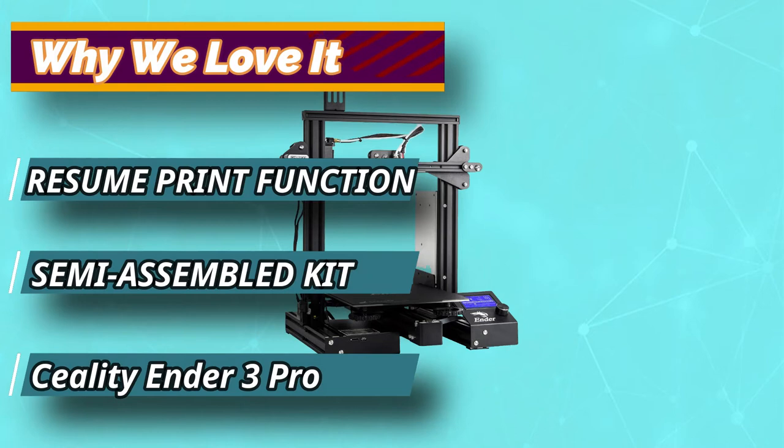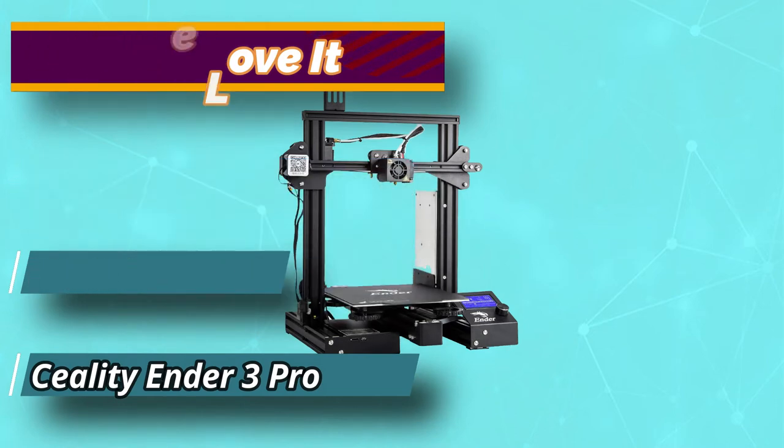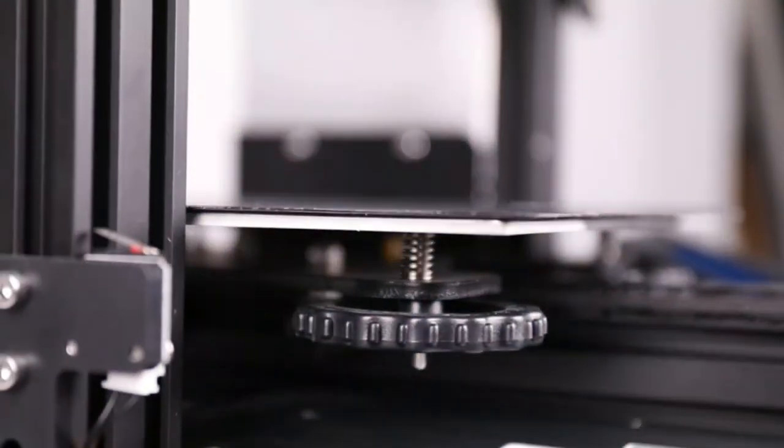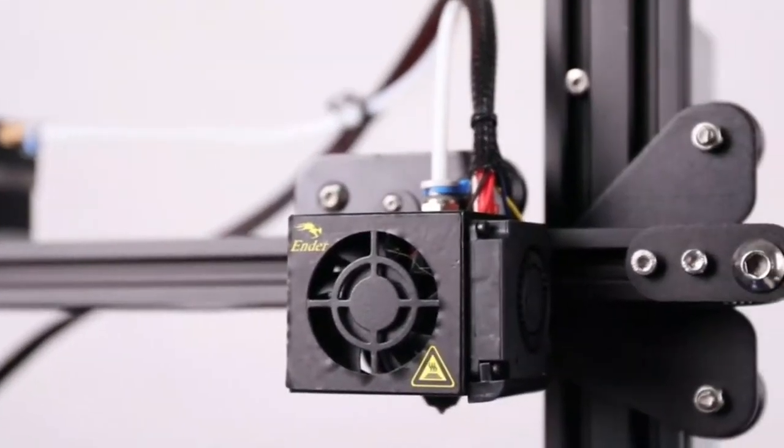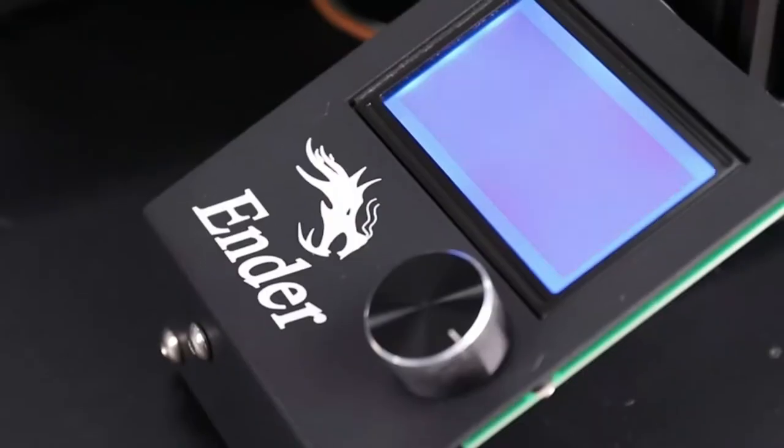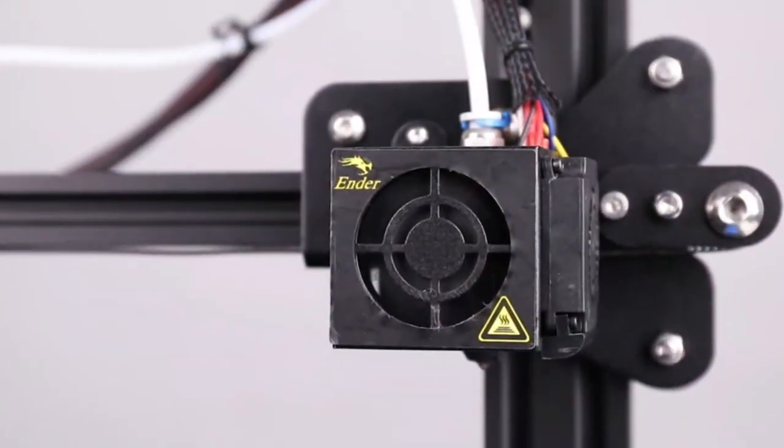Print Resume Function: In case of power failure, this printer has a retrieve function that enables it to resume printing without reset. Magnetic Printing Bed: Ender 3 Pro Printing Bed is easy to adjust and remove. This makes it easy for you to remove your prints. The printer's textured surface holds the first layers to the printer bed.